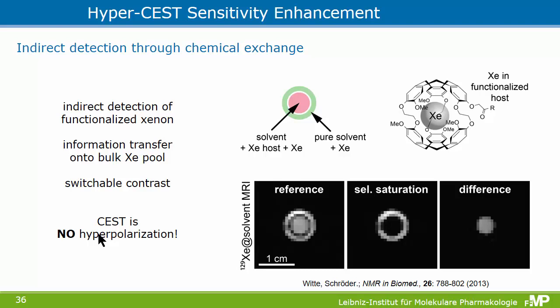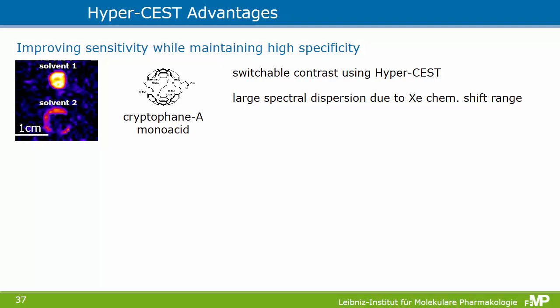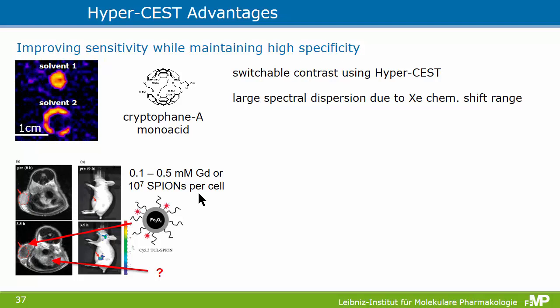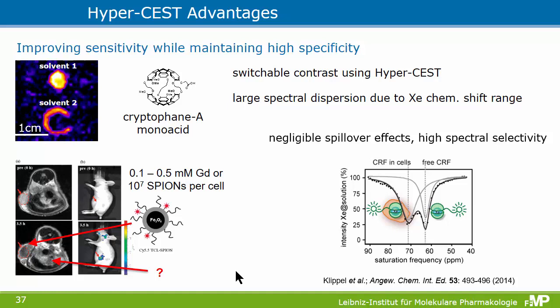In a typical example, you have two different solutions, only one containing the xenon host. You do a reference image, apply a saturation pulse, and get a void signal, then compute the difference of the two images to identify areas where the exchanging xenon hosts are. One should mention that CEST is not hyperpolarization — we actually destroy the hyperpolarization with the saturation pulse. The advantage is that it is a switchable contrast: by sweeping through the saturation frequency, you can address different species with different chemical shifts, unlike iron oxide nanoparticle contrasts where signal loss can have ambiguous origins.